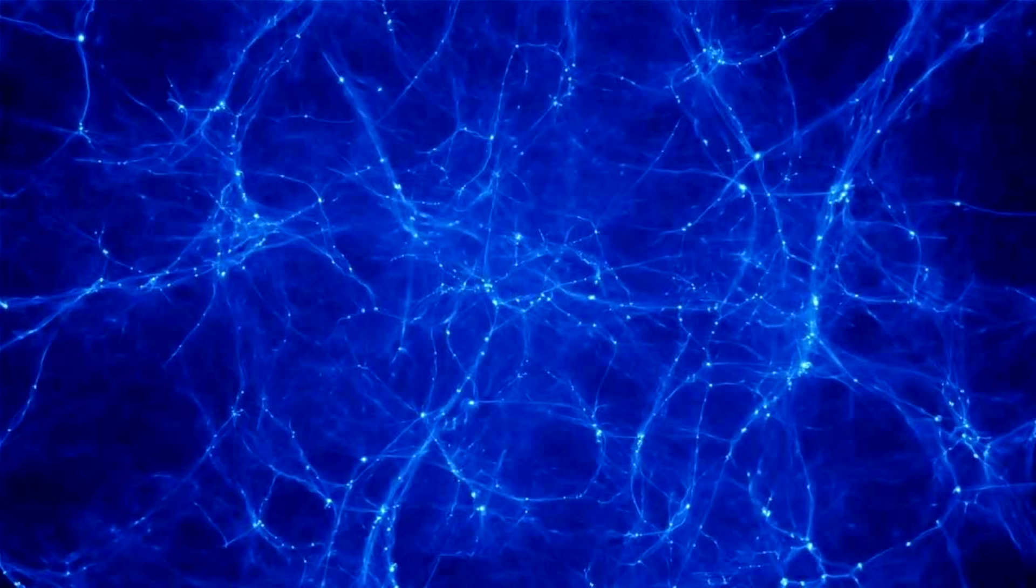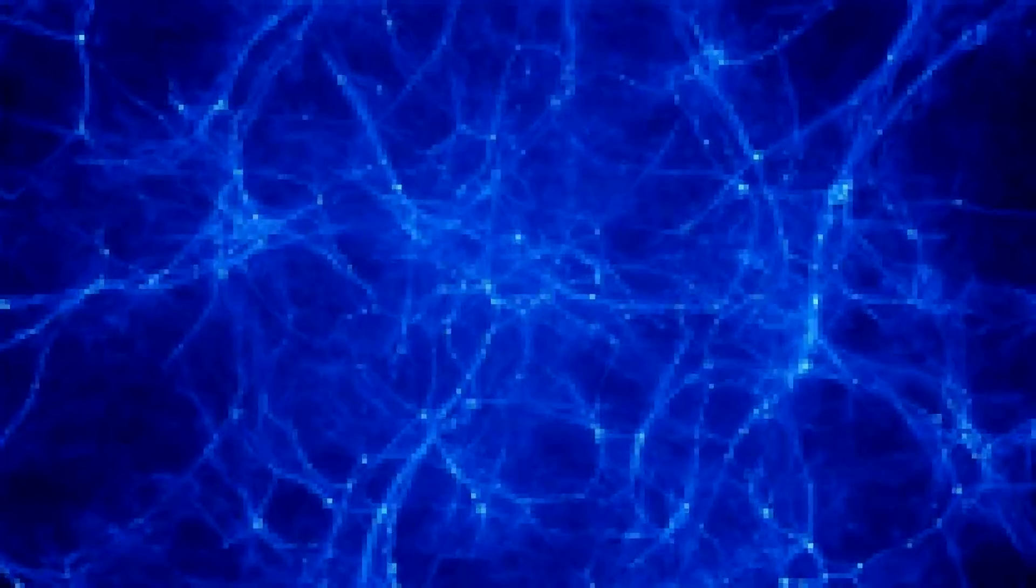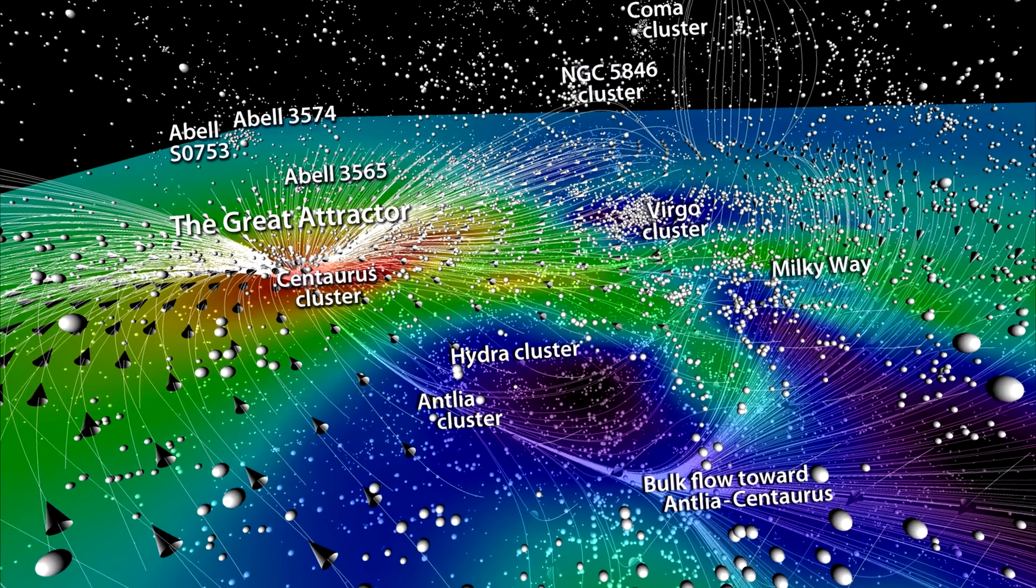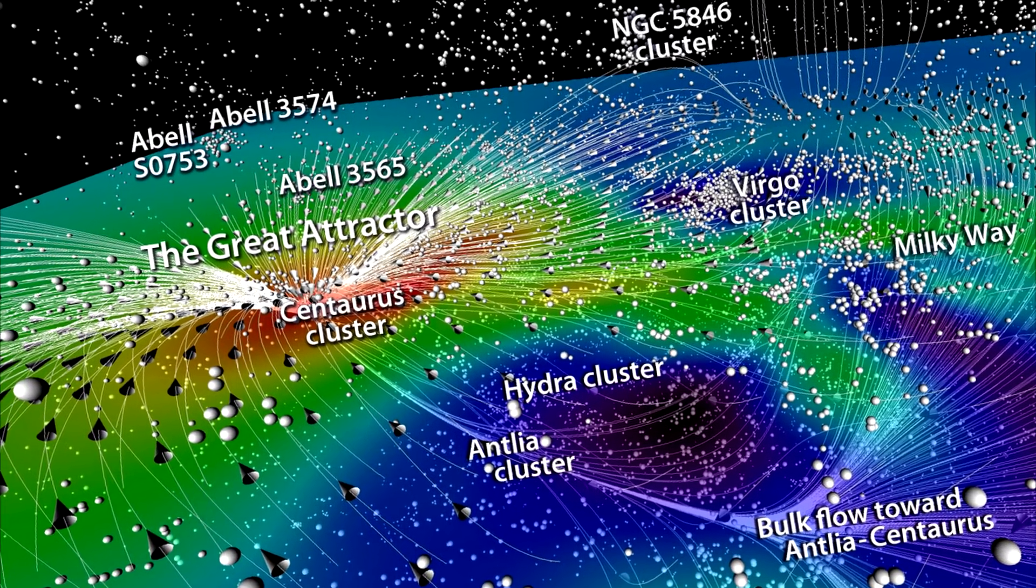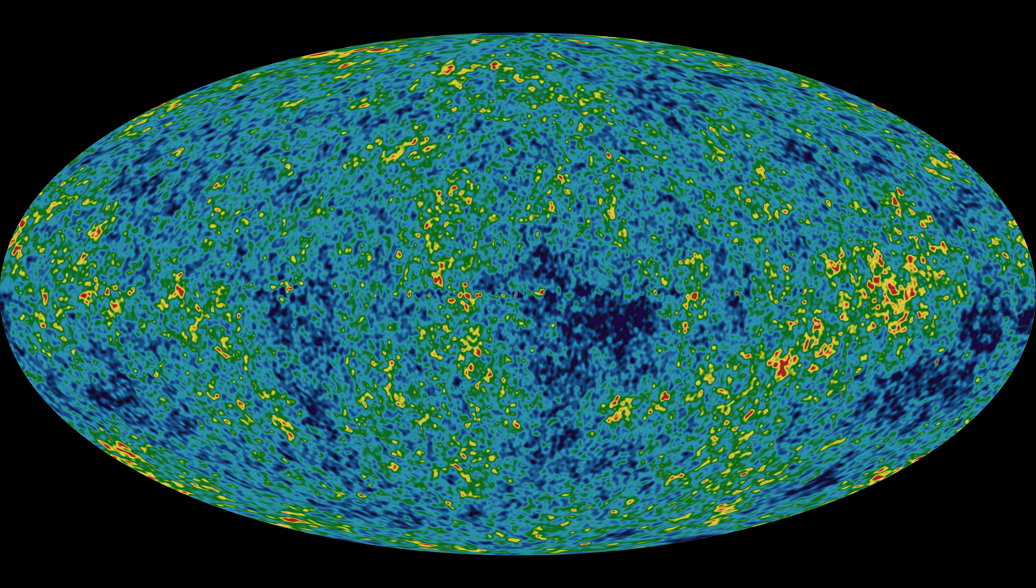In the end, our universe will become even more chaotic than it currently is. The density of the universe will keep decreasing due to cosmic inflation. As a result, the cosmic background temperature will keep dropping.